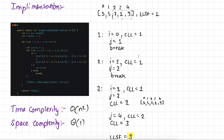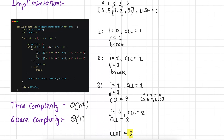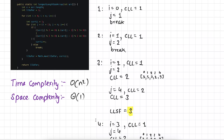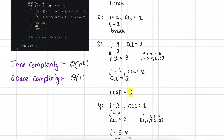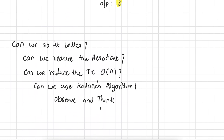Now talking about the time complexity of this function: as you can see we are running 2 loops. The outer loop runs n times and in the worst case the inner loop will also run n times, so the time complexity is O(n²). We are not using any auxiliary space other than the input array and a few variables, so the space complexity is θ(1). This approach can we do better — can we reduce the iterations and reduce the time complexity?